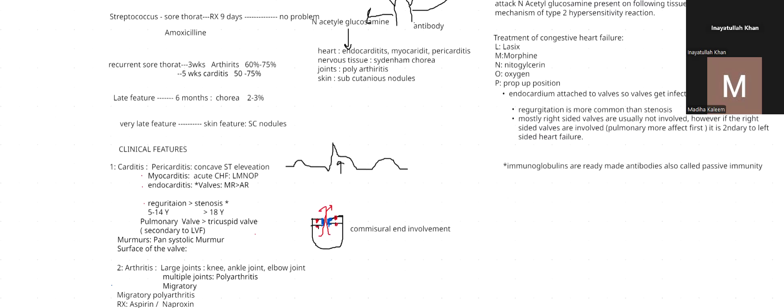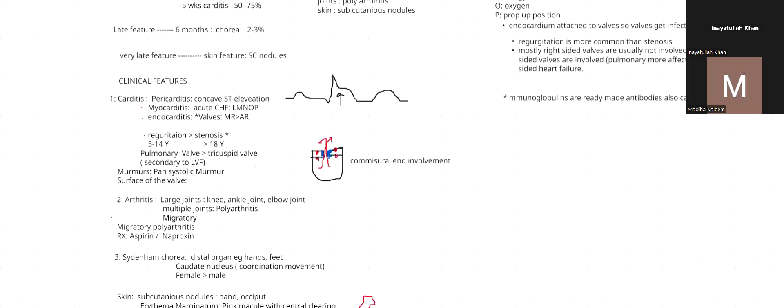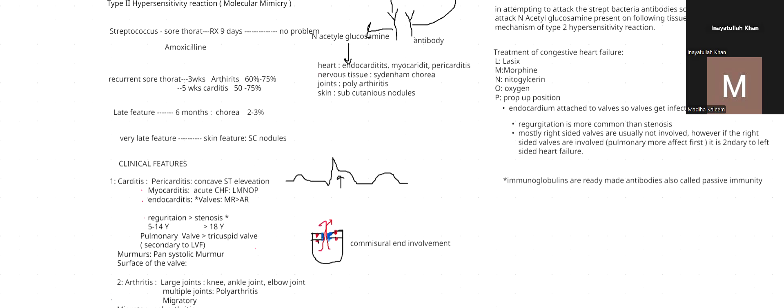Looking at carditis: in pericarditis, the ECG manifestation is concave ST elevation. If myocarditis is affected by immune complexes, the patient develops acute congestive heart failure, treated with LMNOP therapy — L for Lasix, M for morphine, N for nitroglycerin/nitrates, O for oxygen, and P for proper position.